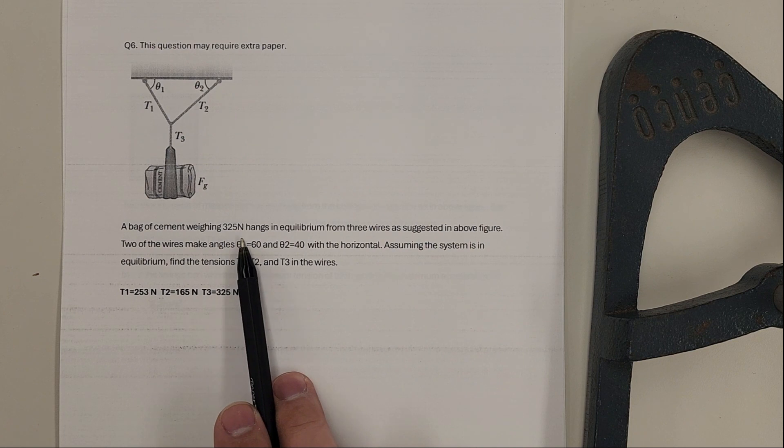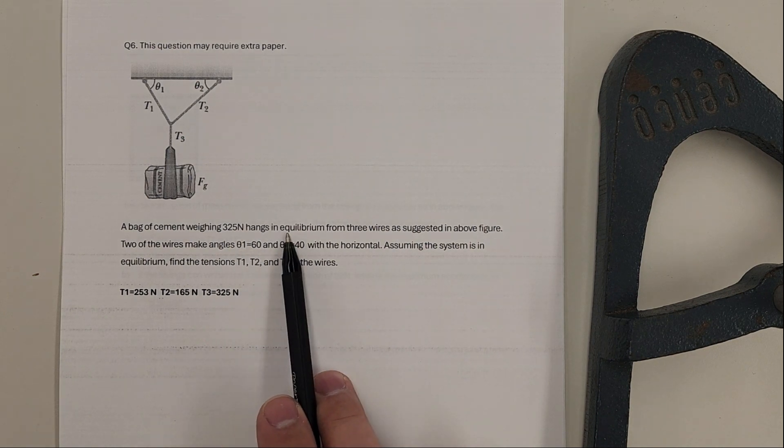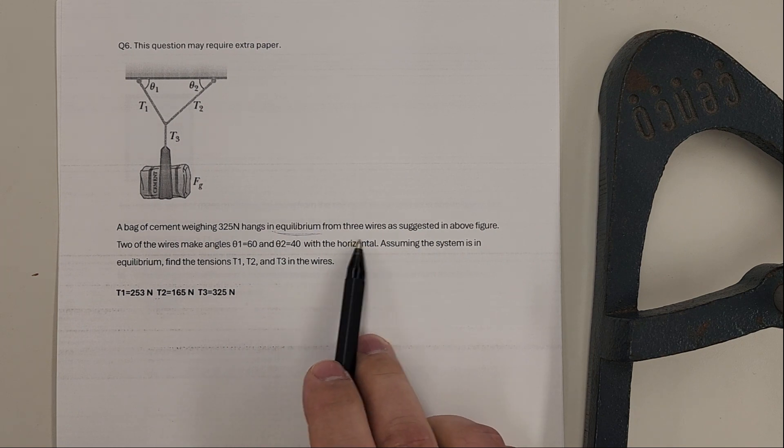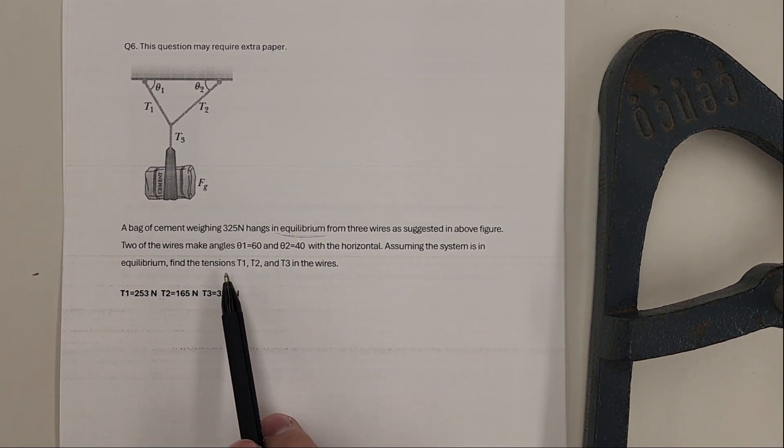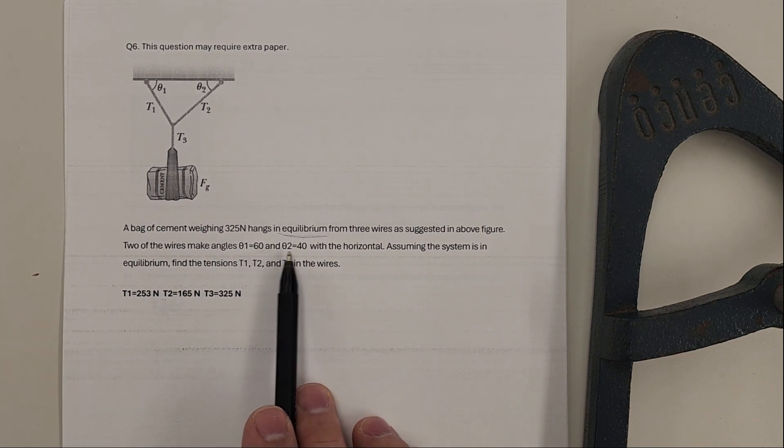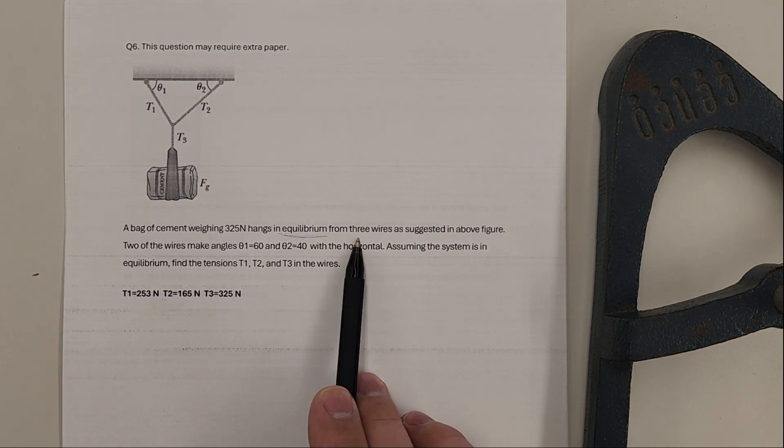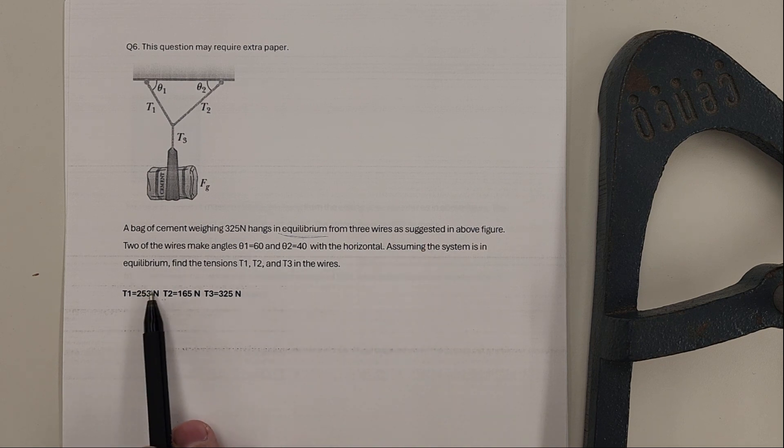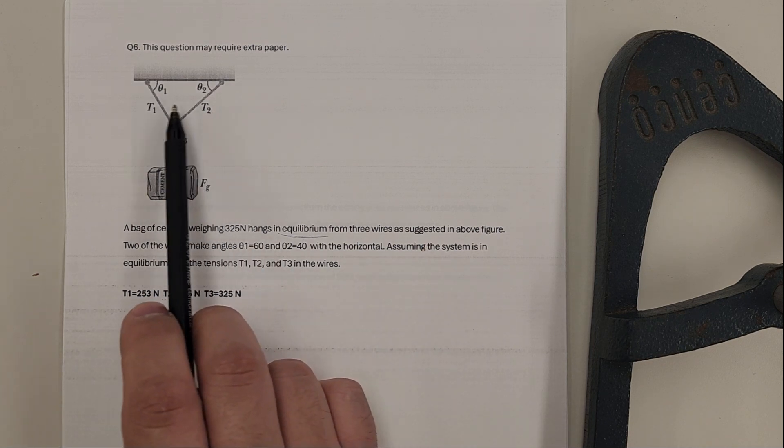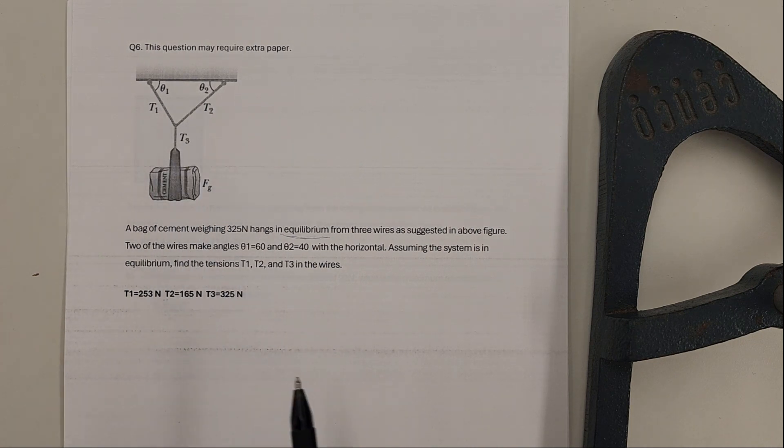The bag of cement weighs 325 newtons and is in equilibrium from three wires as suggested in the figure above. Two of the wires make angles at 60 degrees and 40 degrees with the horizontal. Assuming the system's in equilibrium, find the tensions T1, T2, and T3. So these three cords will have those three tensions.